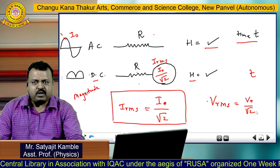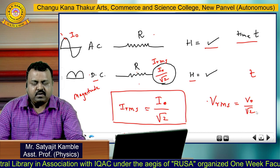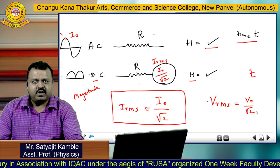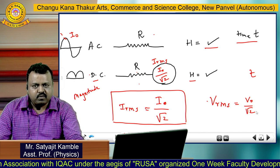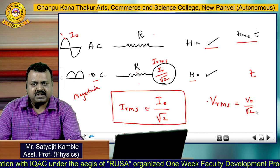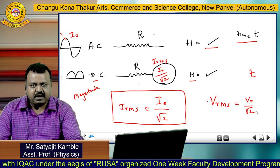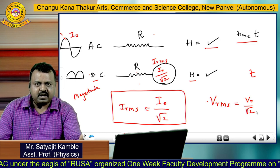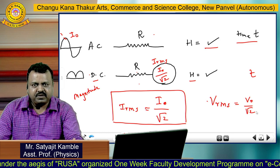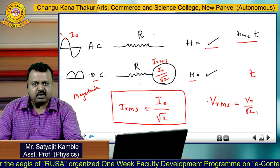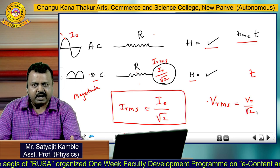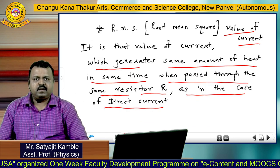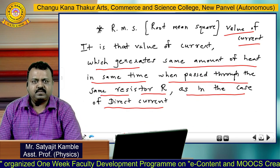So in this way, today we have learned what is alternating current, what is alternating voltage, how to measure alternating current, and the term we use to measure alternating current is called the RMS value. Thank you.